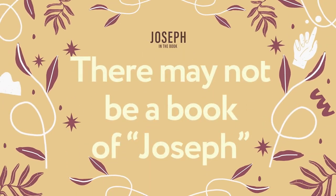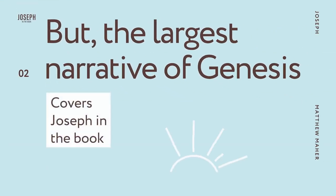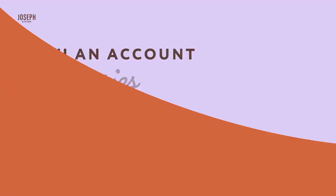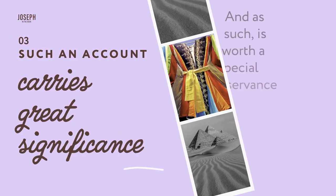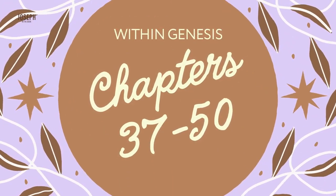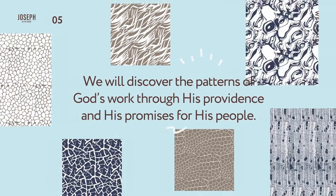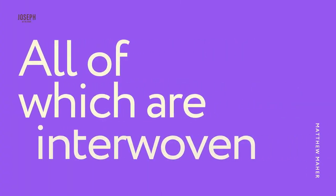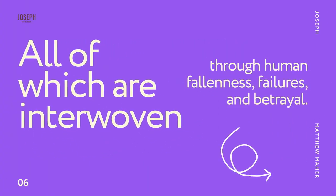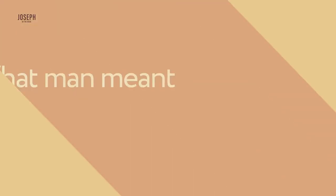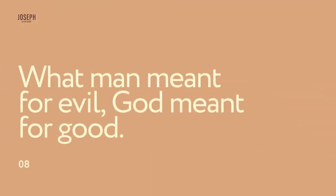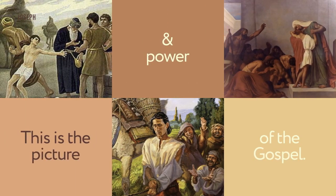There may not be a singular book of Joseph, but the largest narrative of Genesis covers Joseph. This tells us that such an account carries great significance, and as such is worth a special observance. Within Genesis chapters 37 to 50, we will discover the patterns of God's work through His providence and His promises for His people, all of which are interwoven through human fallenness, failures, and betrayal. What man meant for evil, God meant for good. This is the picture and power of the gospel.